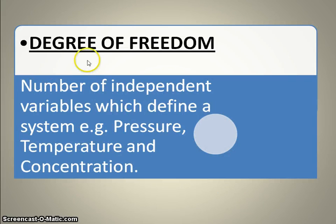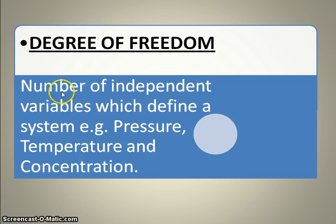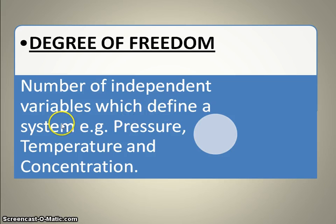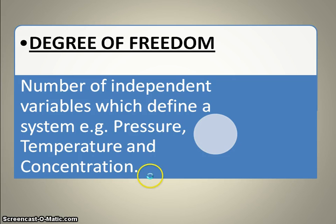Then comes the degree of freedom. Degree of freedom is defined as the number of independent variables which define a system completely — that is, pressure, temperature, concentration, and volume can be taken as well.